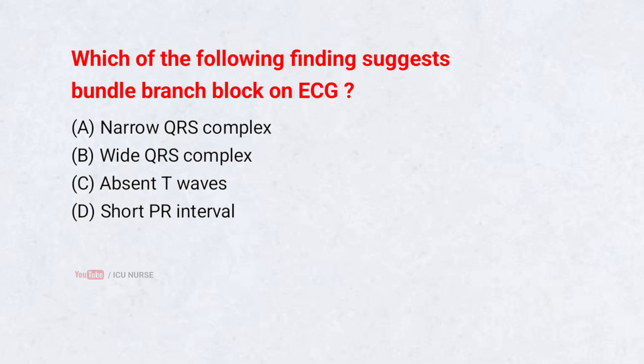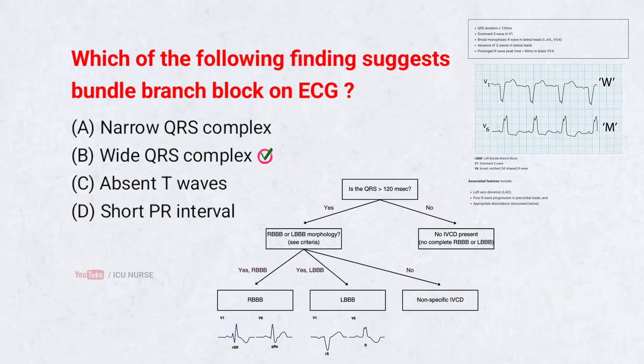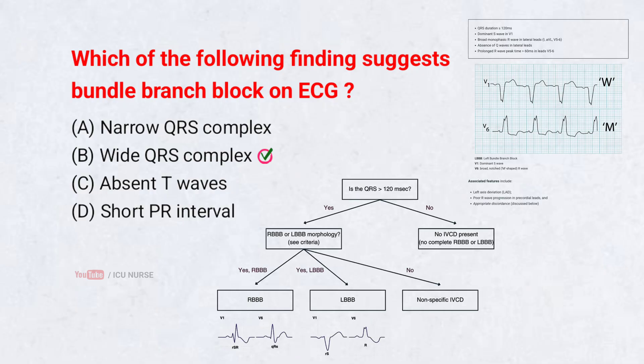Which of the following findings suggest bundle branch block on ECG? A. Narrow QRS complex, B. Wide QRS complex, C. Absent T-waves, D. Short PR interval. Correct answer: B. Wide QRS complex — bundle branch block suggests a wide QRS complex, usually ≥120 ms.